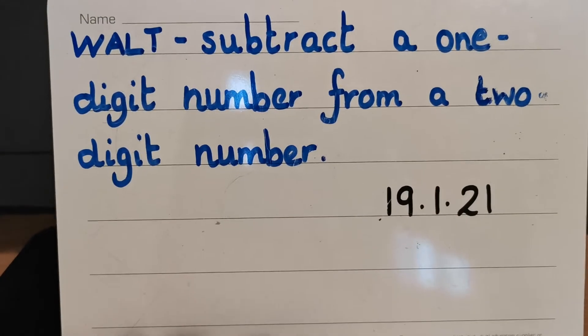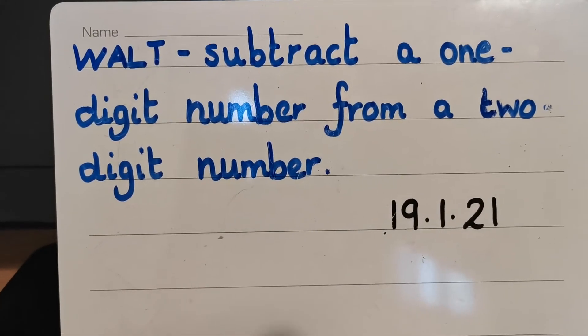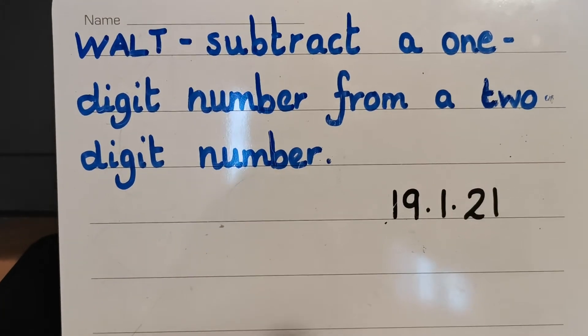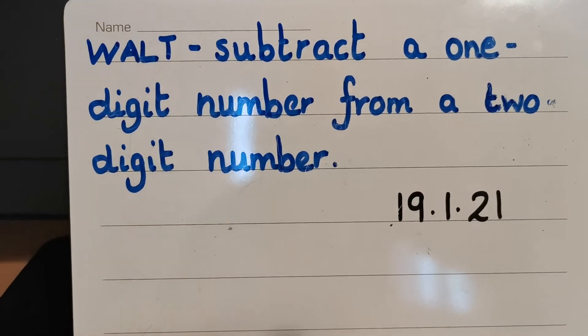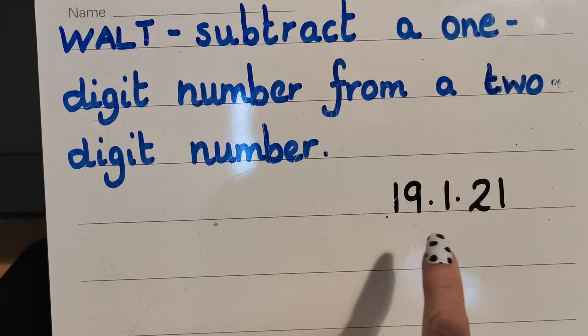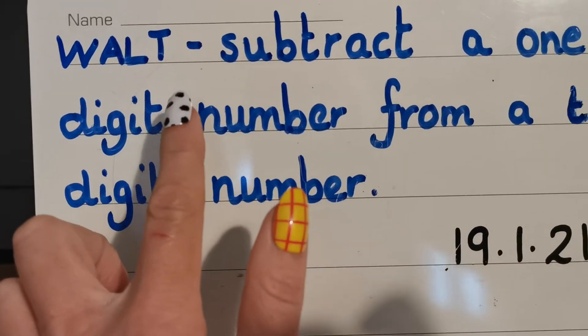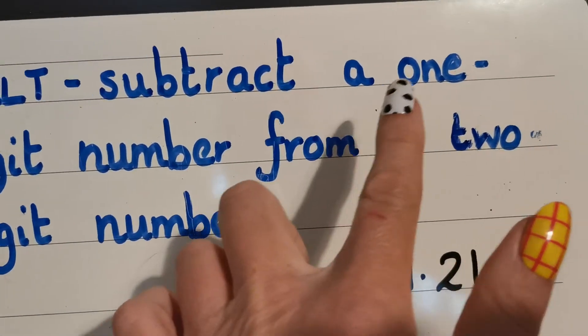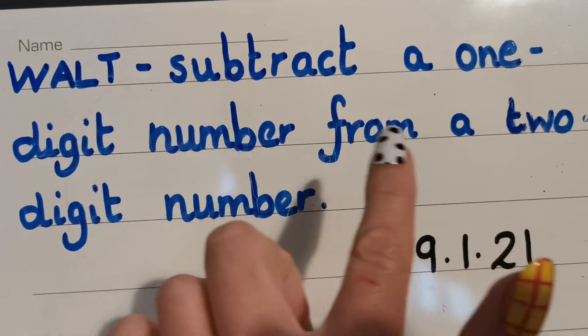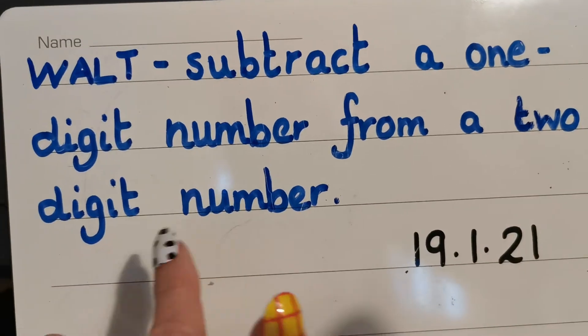Hello everybody, this is Mrs. Gilbert. Welcome to Maths for Tuesday the 19th of January. So the short date today is 19, 1, 21. And today we are learning to subtract a one-digit number from a two-digit number.